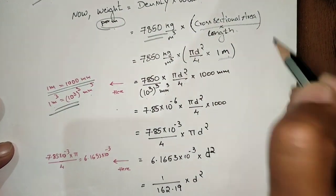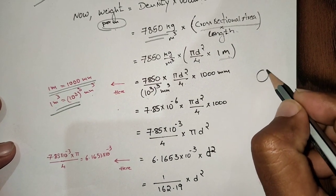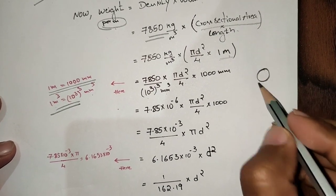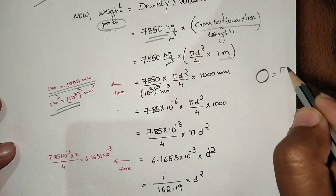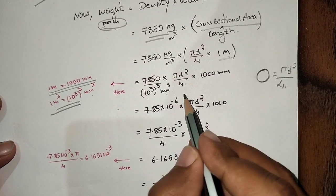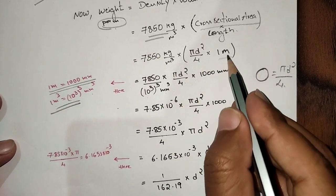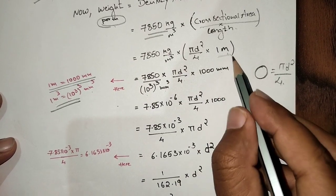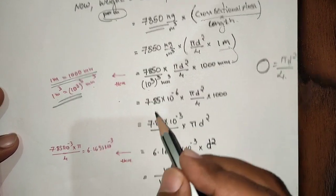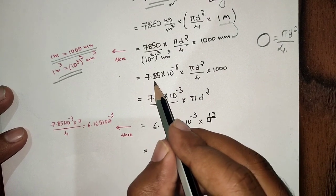That's the reason why πd²/4 is mentioned here. Meter is converted into mm, so 1 meter equals 1000mm. Now we can make sure that it will be given as 7.85 × 10⁻⁶ × πd²/4 × 1000.